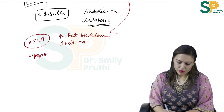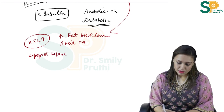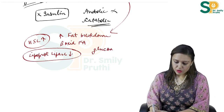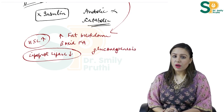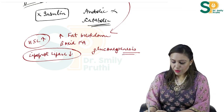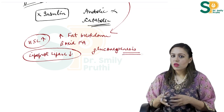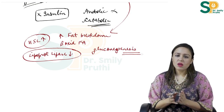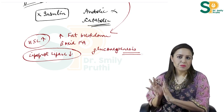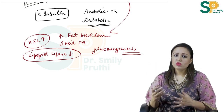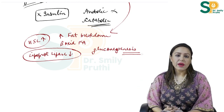Lipoprotein lipase enzyme will decrease. Gluconeogenesis will occur in the body. In diabetes, the blood is in hyperglycemia, but the body will still make more glucose. Why? Because glucose is abundant in the blood, but that glucose is not going into the cells. So the cells are thinking that we are in fasting.